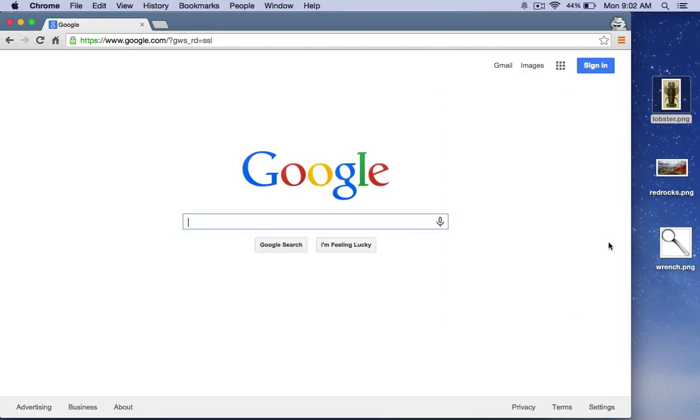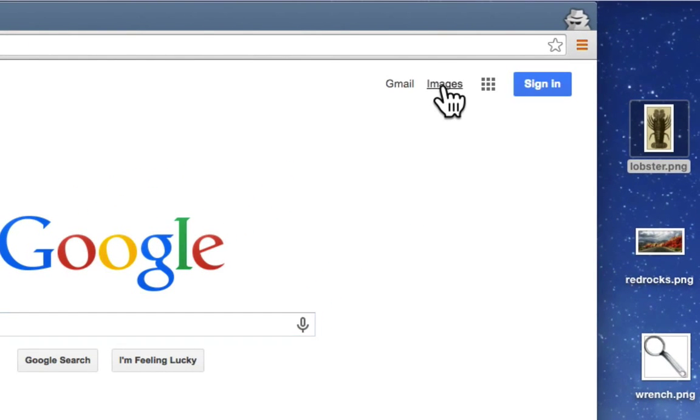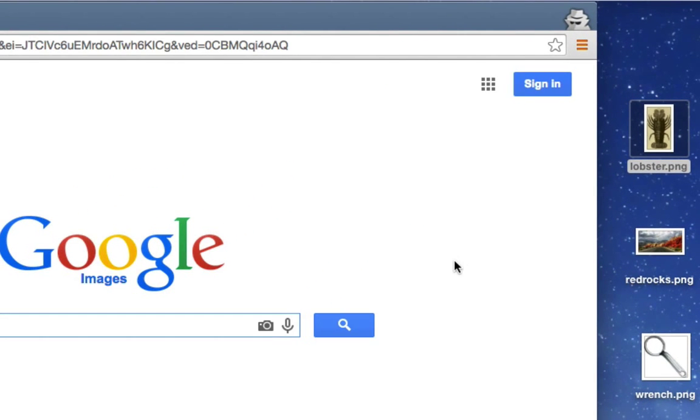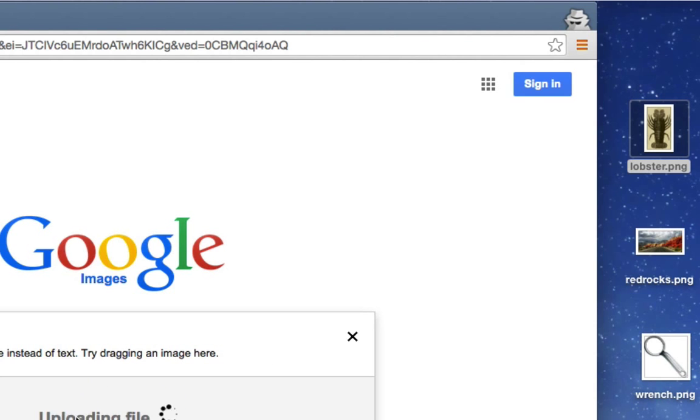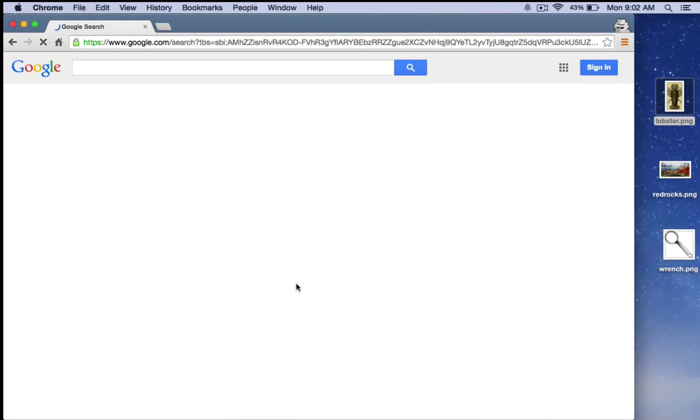So here we are, regular home page of Google. I'm going to first switch to image search by clicking on the image button on the upper right. And now we're in image search. Notice here that we've got the camera icon here. And what I can do is take a picture, say this lobster picture that's on my desktop, drag it over and drop the image here.